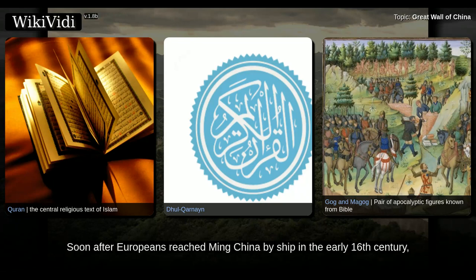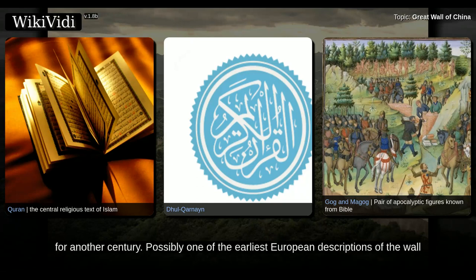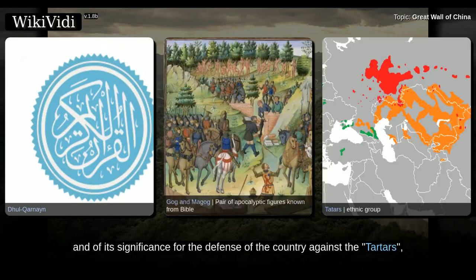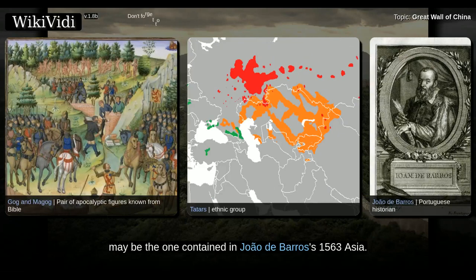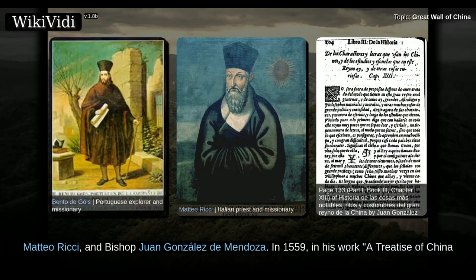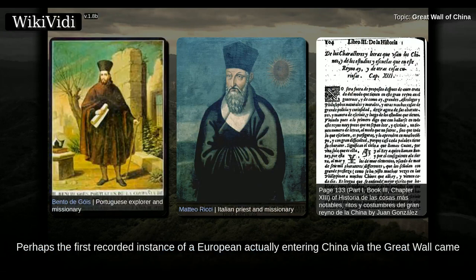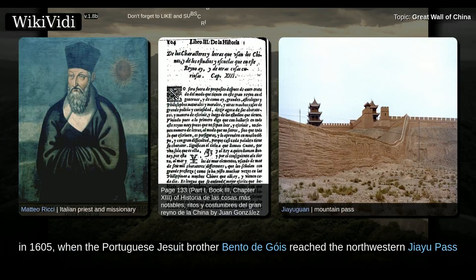Soon after Europeans reached Ming China by ship in the early 16th century, accounts of the Great Wall started to circulate in Europe, even though no European was to see it for another century. Possibly one of the earliest European descriptions of the wall and of its significance for the defense of the country against the Tatars may be the one contained in João de Barros's 1563 Asia. Other early accounts in Western sources include those of Gaspar da Cruz, Ben Todegos, Mateo Ricci, and Bishop Juan González de Mendoza. In 1559, in his work A Treatise of China and the Adjoining Regions, Gaspar da Cruz offers an early discussion of the Great Wall. Perhaps the first recorded instance of a European actually entering China via the Great Wall came in 1605, when the Portuguese Jesuit brother Ben Todegos reached the northwestern Jiayuguan Pass from India.